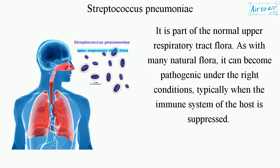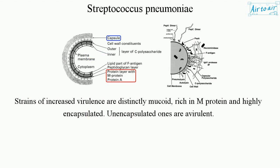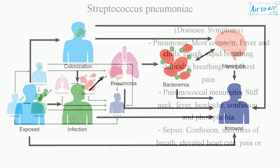It is part of the normal upper respiratory tract flora. As with many natural flora, it can become pathogenic under the right conditions, typically when the immune system of the host is suppressed. Strains of increased virulence are distinctly mucoid, rich in M-protein, and highly encapsulated. Unencapsulated ones are avirulent.